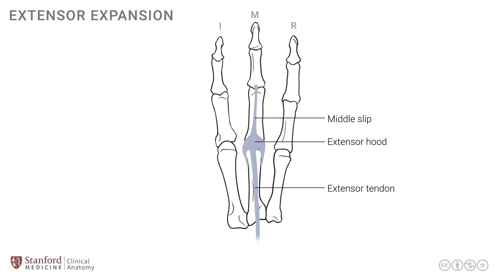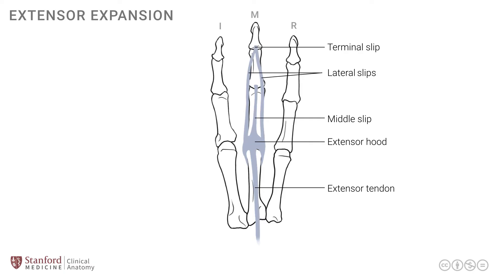There are two additional slips, known as the lateral slips. One is on the radial side of the finger, while the other is on the ulnar side of the finger. The lateral slips unite distally to form the terminal slip, and the terminal slip then attaches onto the base of the distal phalanx. This is an important arrangement that allows for individual function at each joint, in terms of flexion and extension.